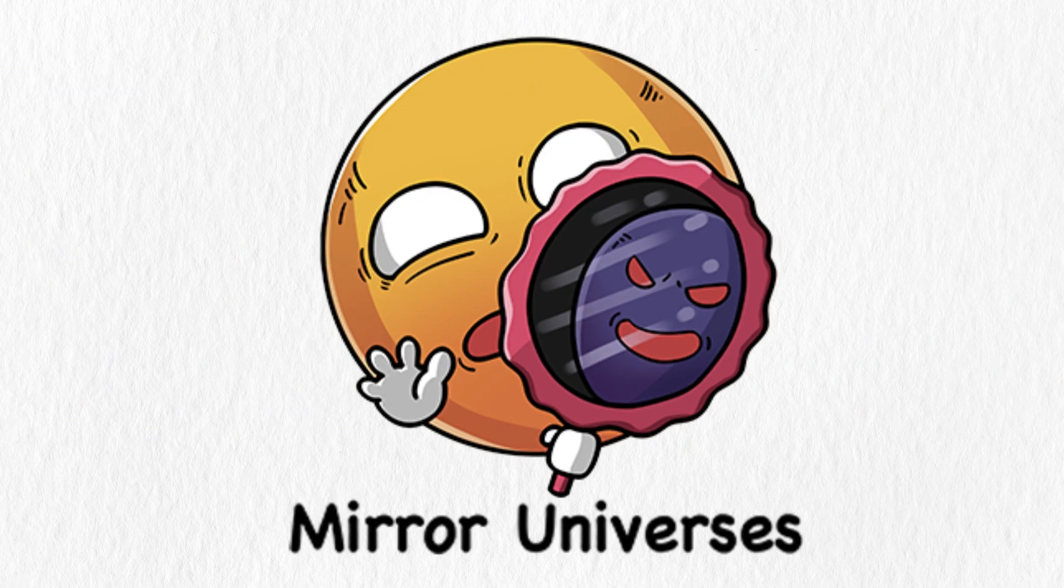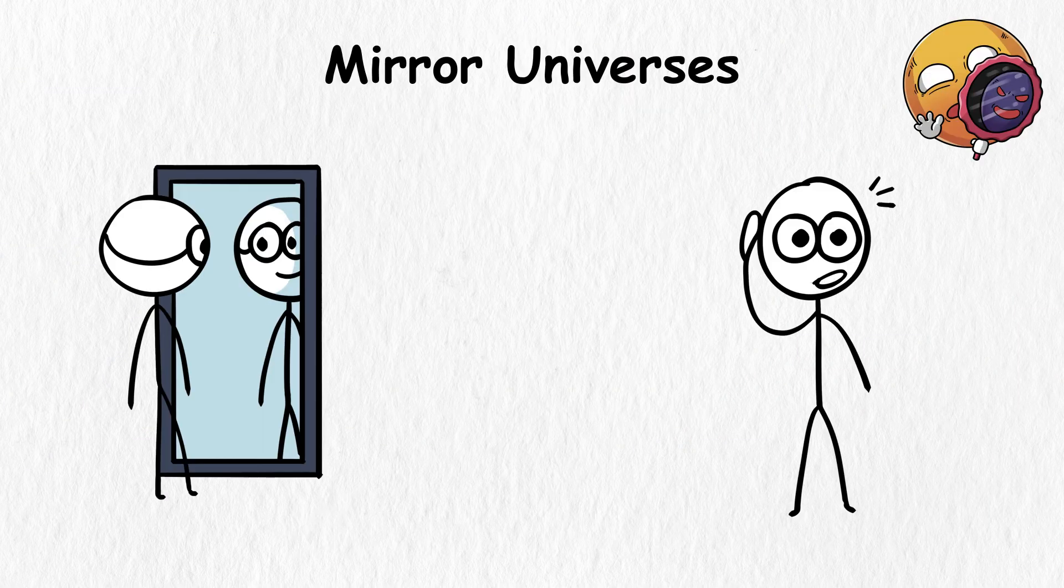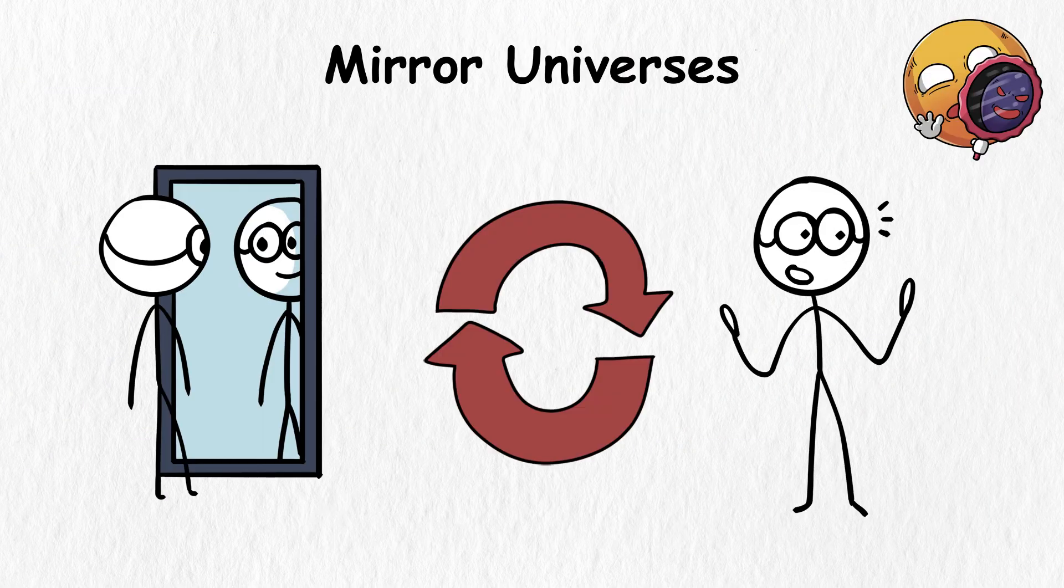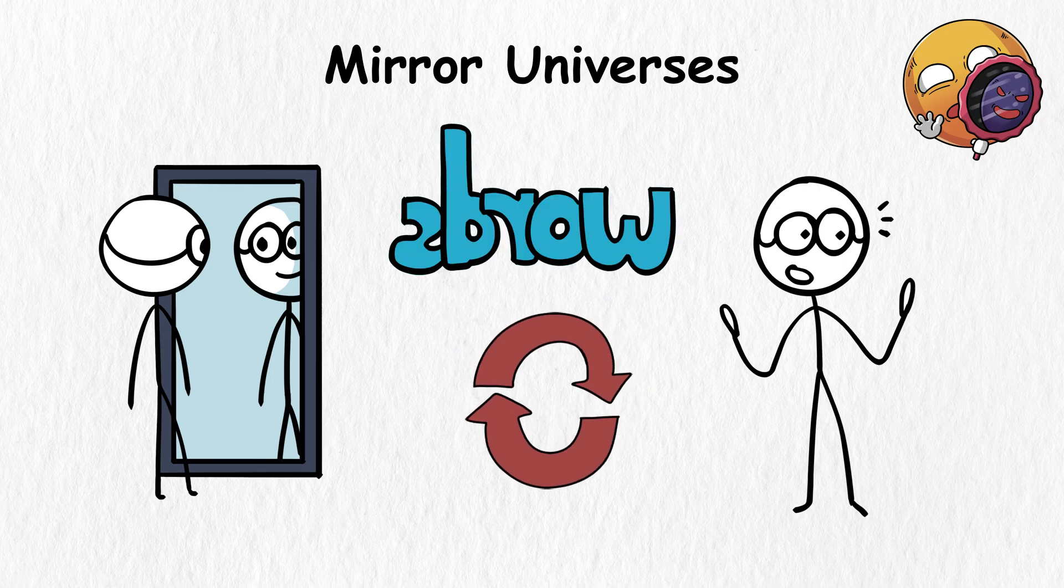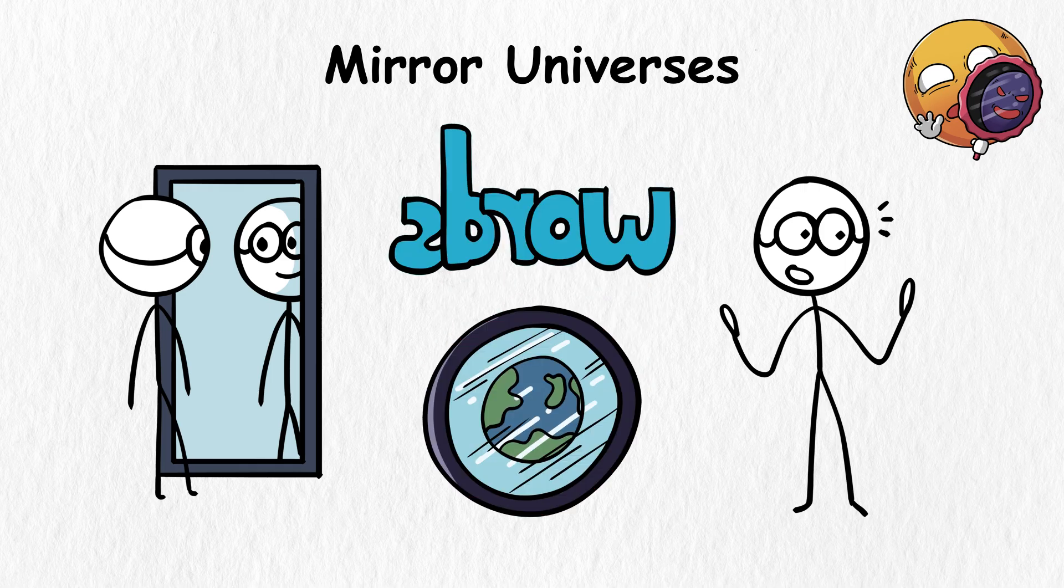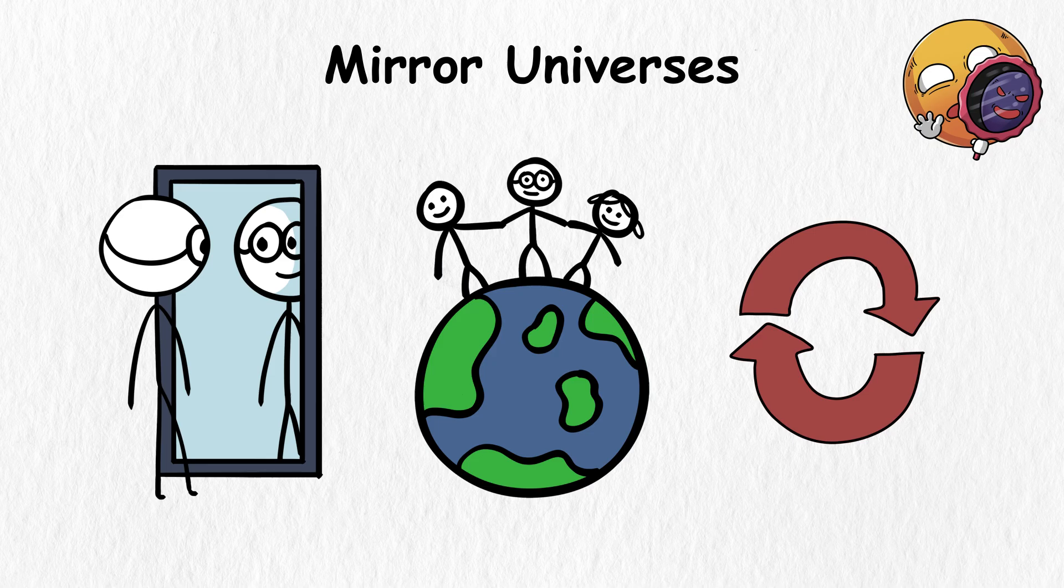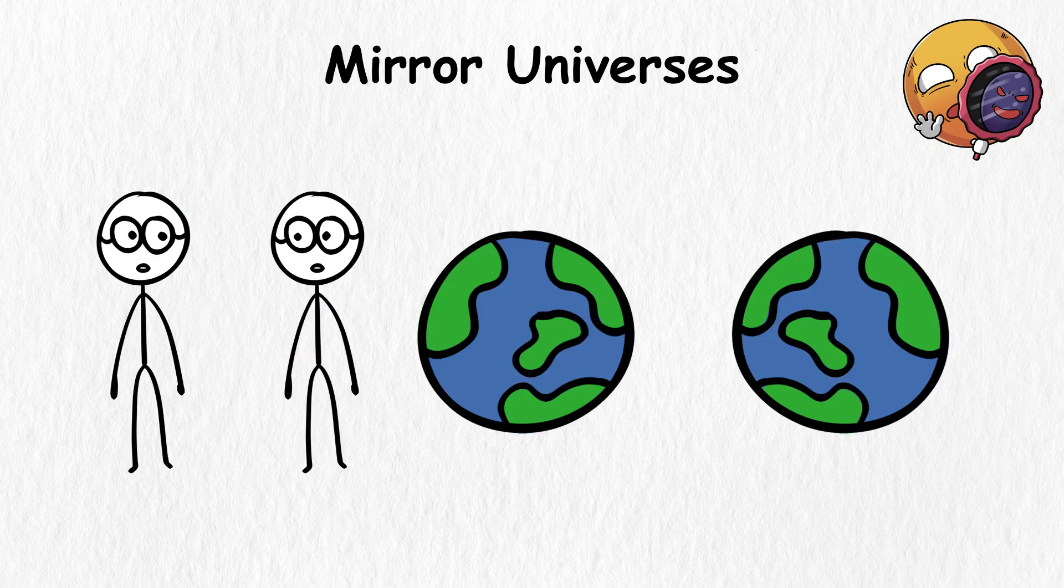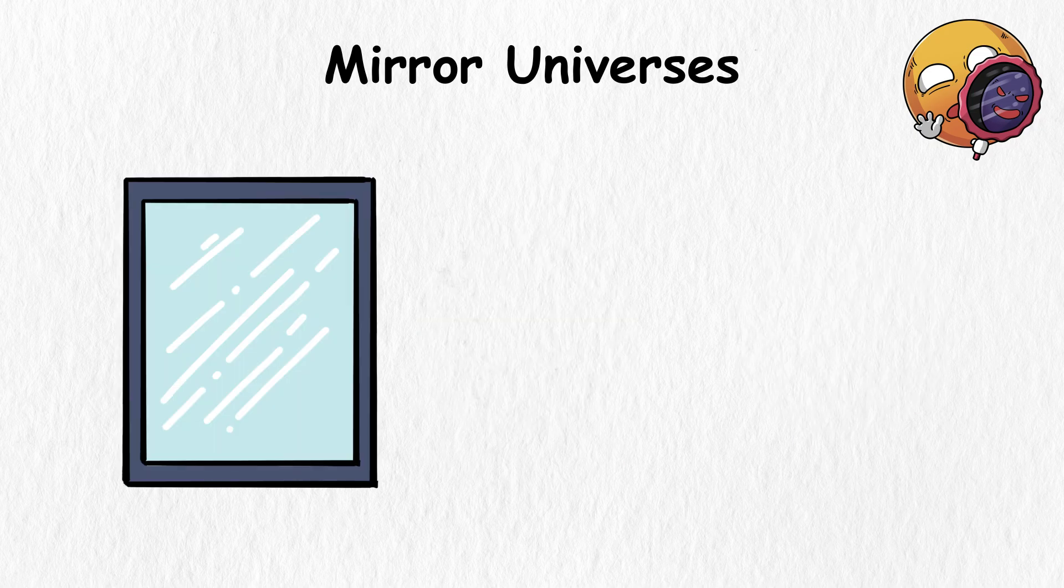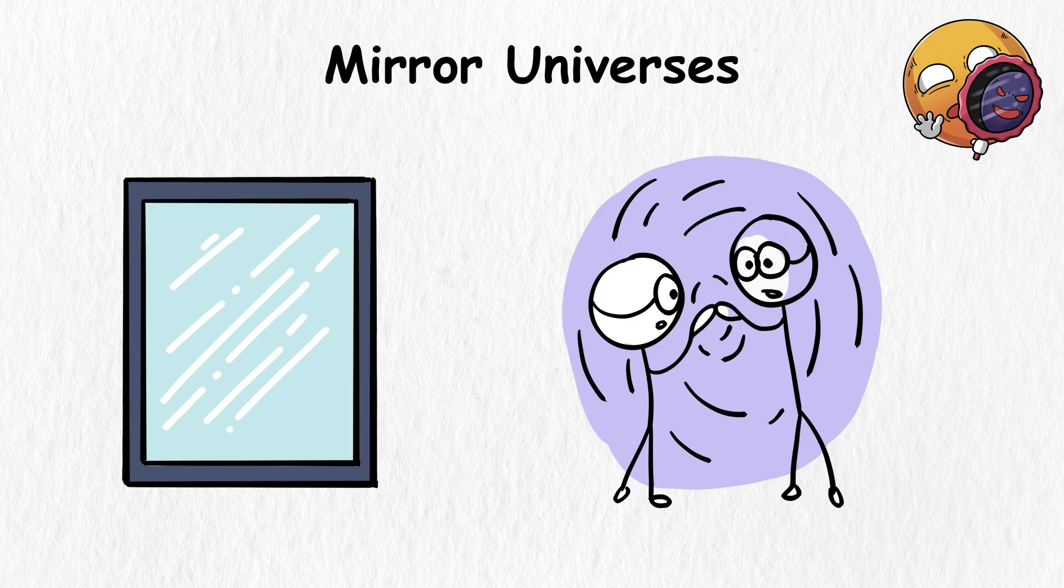Mirror Universes. Looking at a mirror, you'll notice that everything is flipped around. Your left becomes your right. Words are also in reverse. The world you see in the mirror is essentially a reverse universe of the world you live in. It's like having a twin in a different world that exists within the mirror. This is similar to how the concept of a mirror universe works.